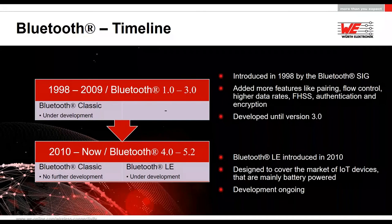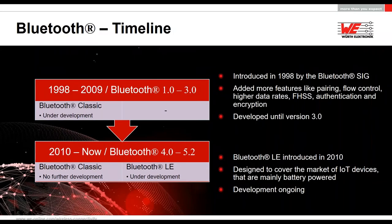In 2010, a second part of the standard was added: Bluetooth Low Energy. Development on Bluetooth Classic was stopped and only improvements have been made on the Bluetooth Low Energy side. The reason for inventing Bluetooth Low Energy was that Bluetooth Classic was not made for battery-powered systems — the energy consumption is quite high. Looking at future markets, especially the IoT market, the Bluetooth standard needed to cover such battery-powered devices.